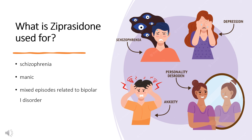In its oral form, Ziprasidone is approved for the treatment of schizophrenia, as monotherapy for acute treatment of manic or mixed episodes related to bipolar I disorder, and as adjunctive therapy to lithium or valproate for maintenance treatment of bipolar I disorder. The IM formulation is approved only for treatment of acute agitation in schizophrenia.